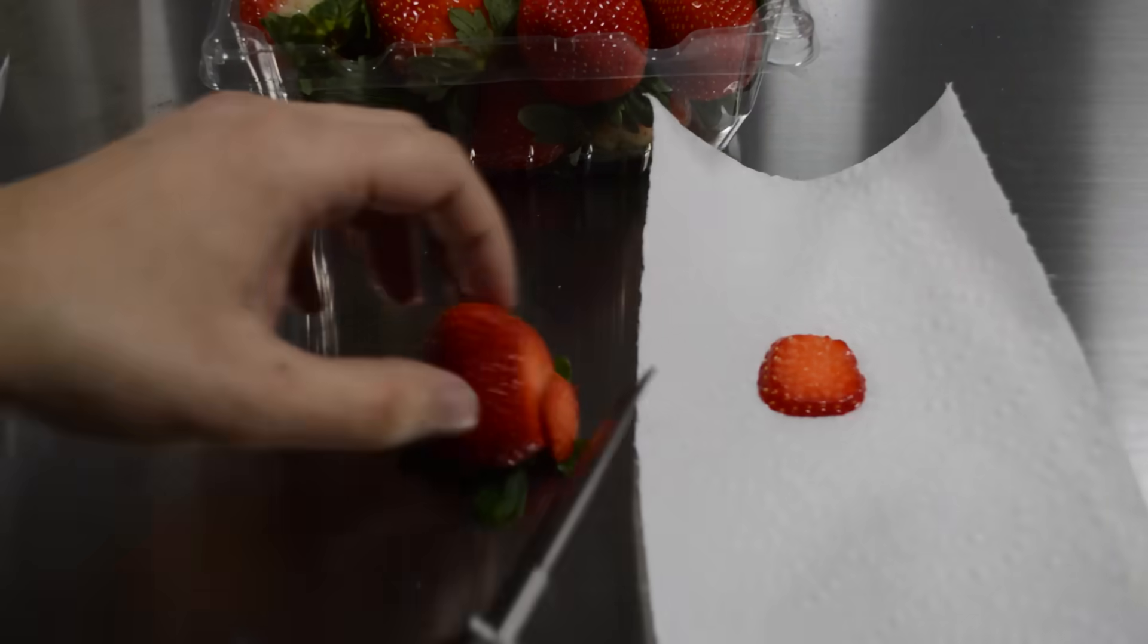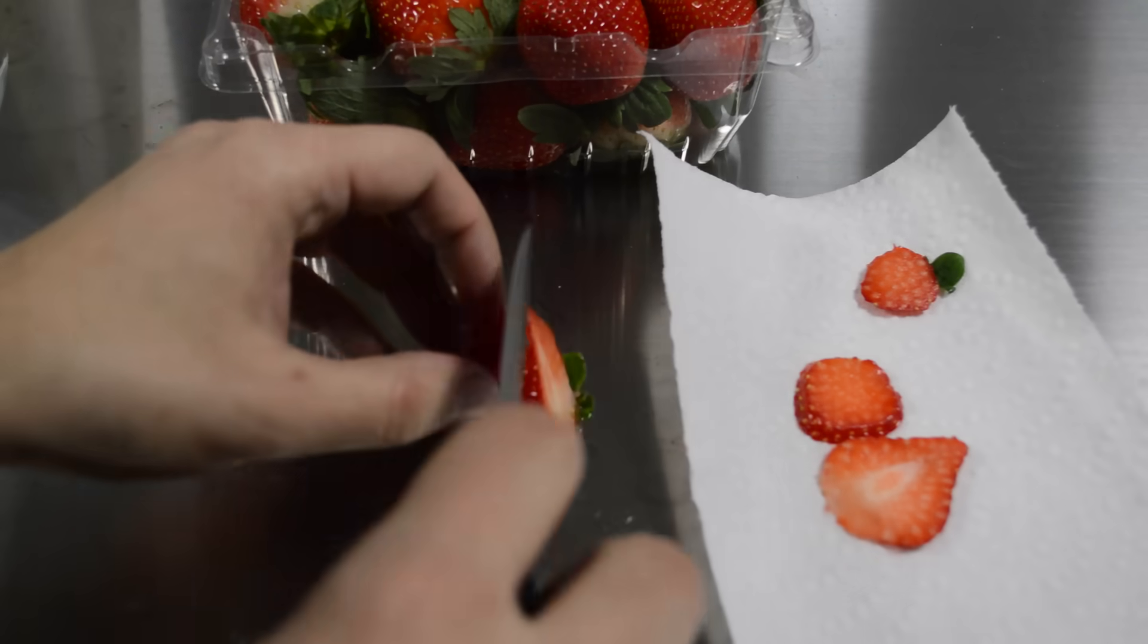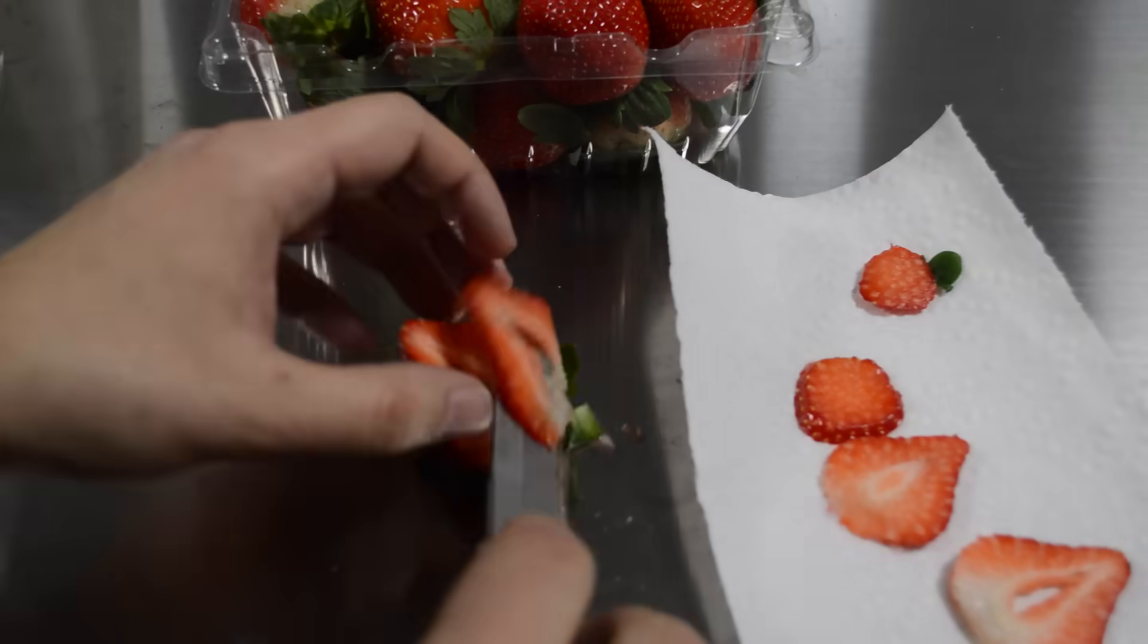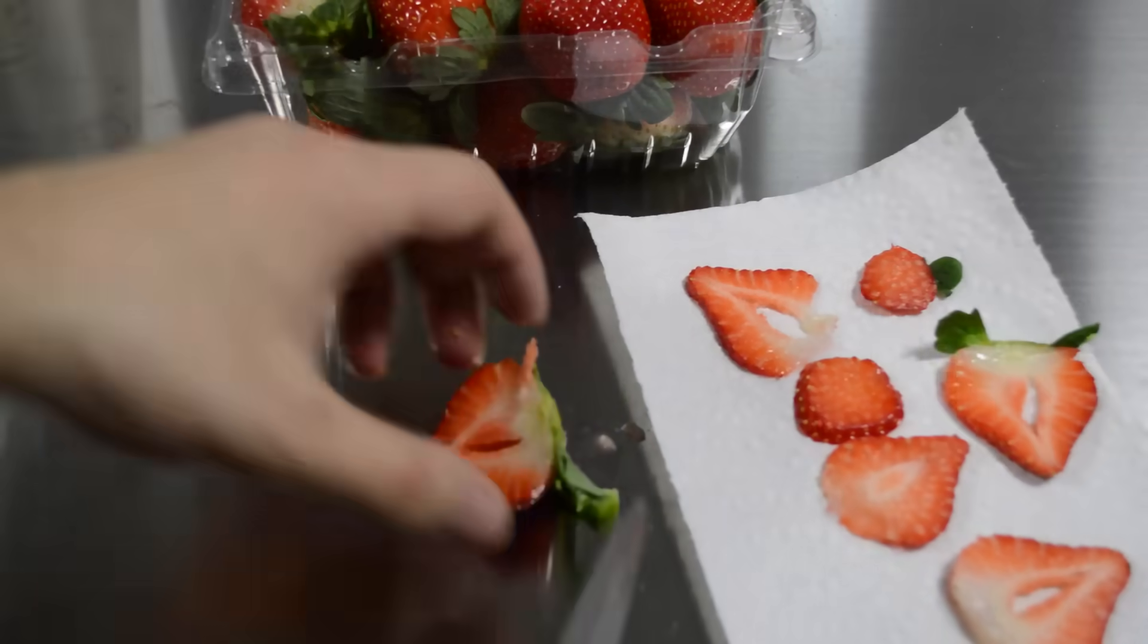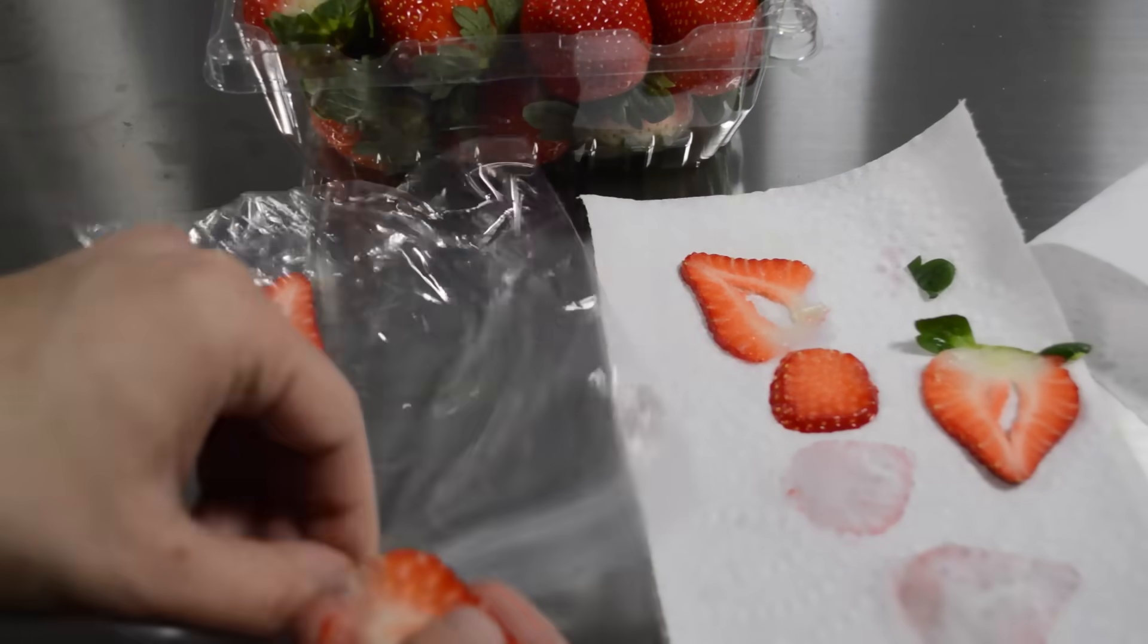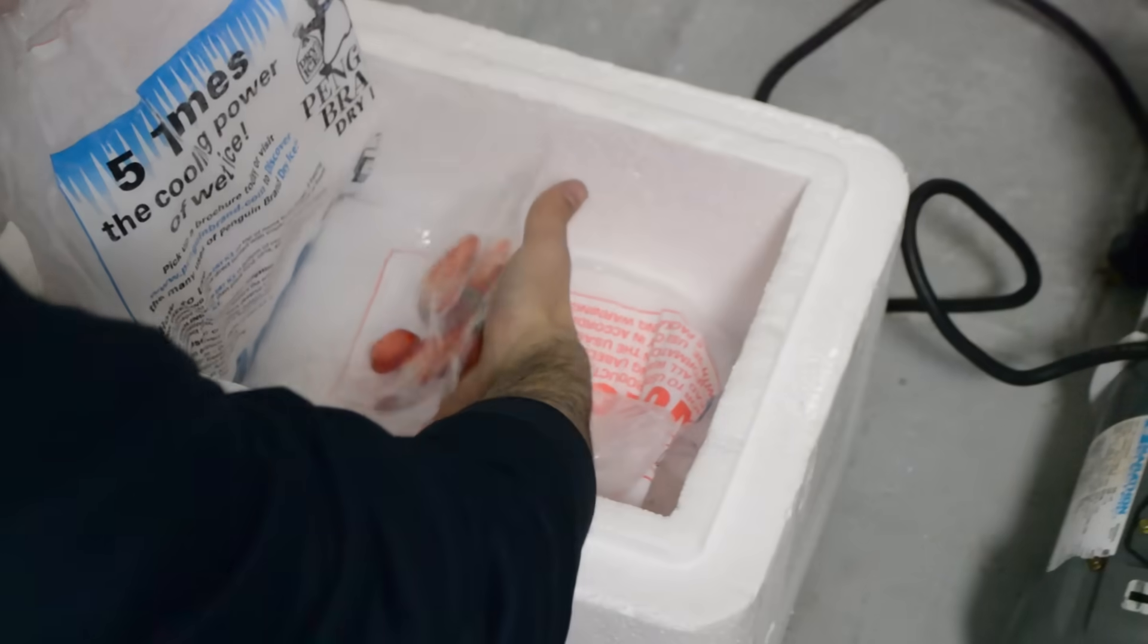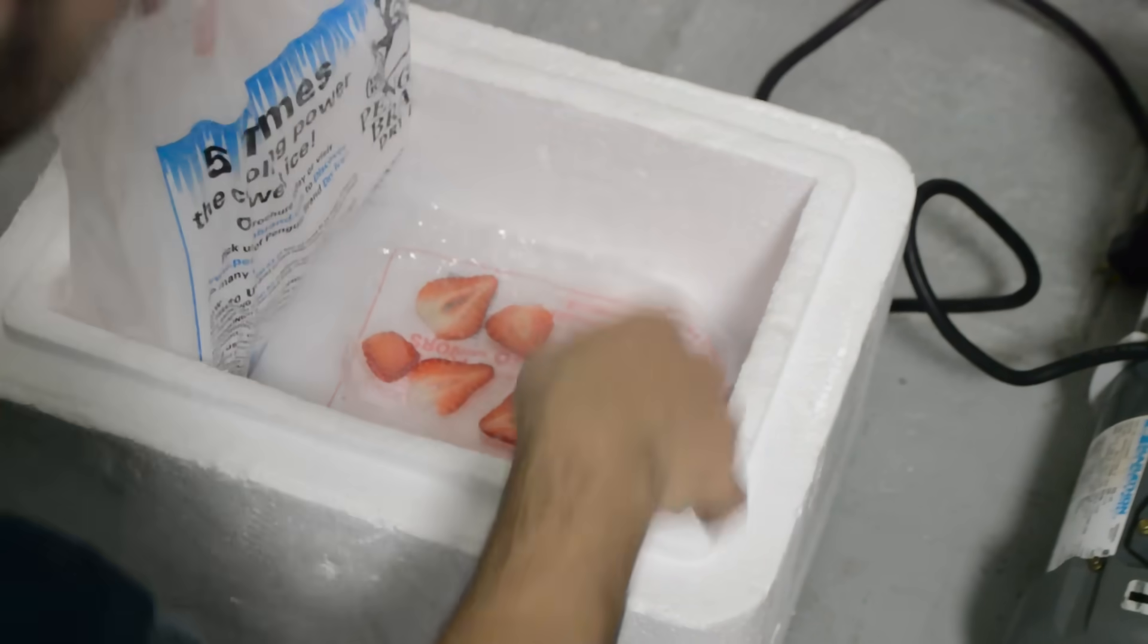Before we can fire this up, we're going to need something to freeze dry. I'm going with a classic and started with some strawberries. I got some fresh berries and then sliced them up. This is to help expose as much surface area as possible to speed up drying. The sliced berries are then placed in a bag and sandwiched carefully between two blocks of dry ice. Allow for about an hour for these to freeze fully.